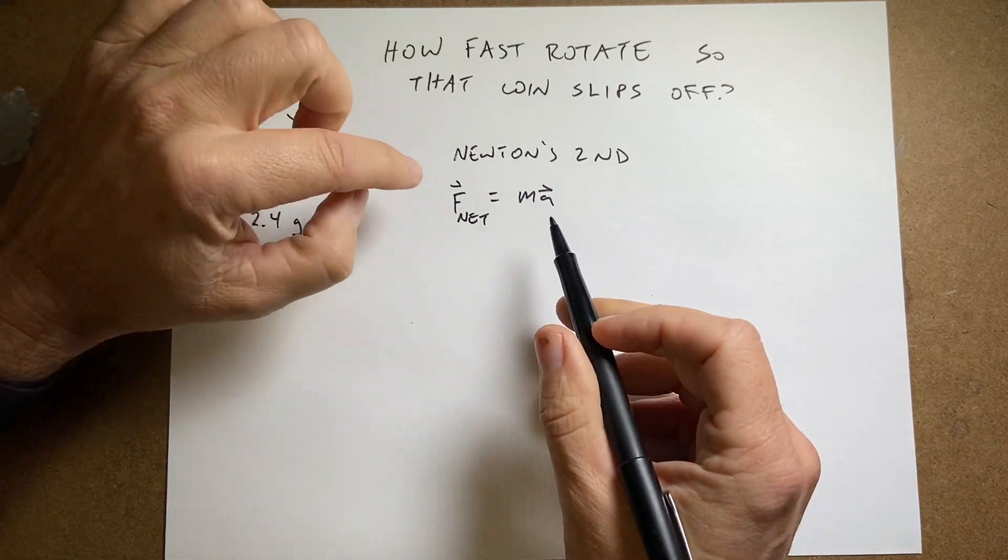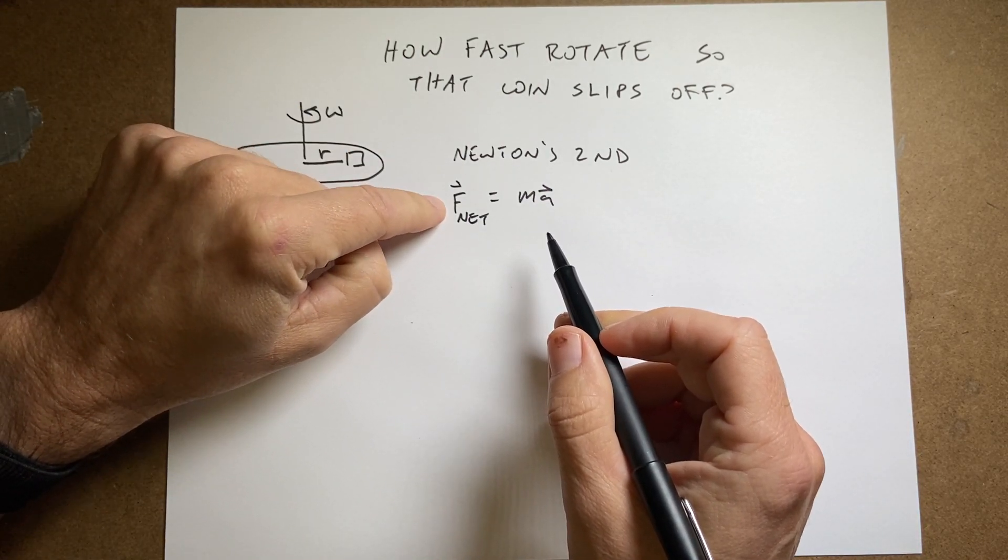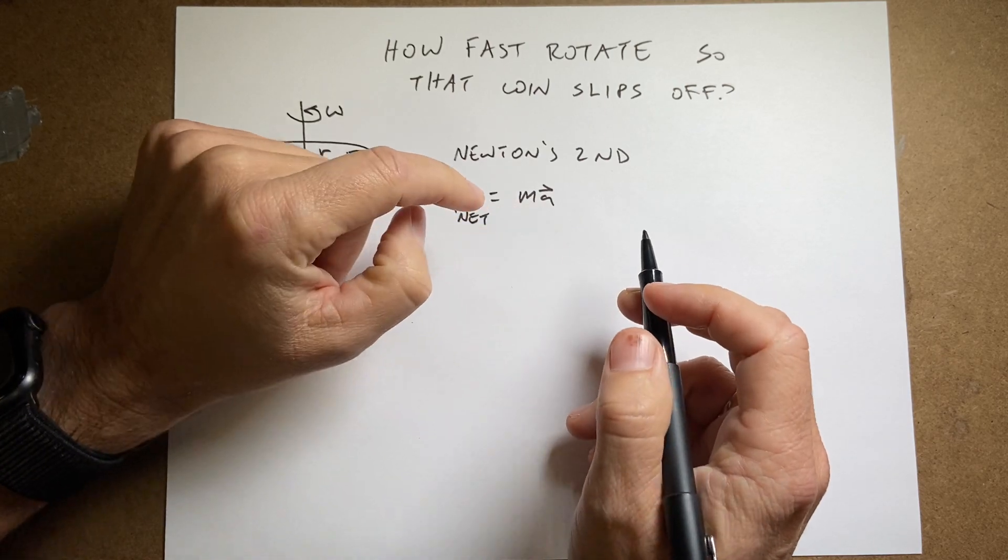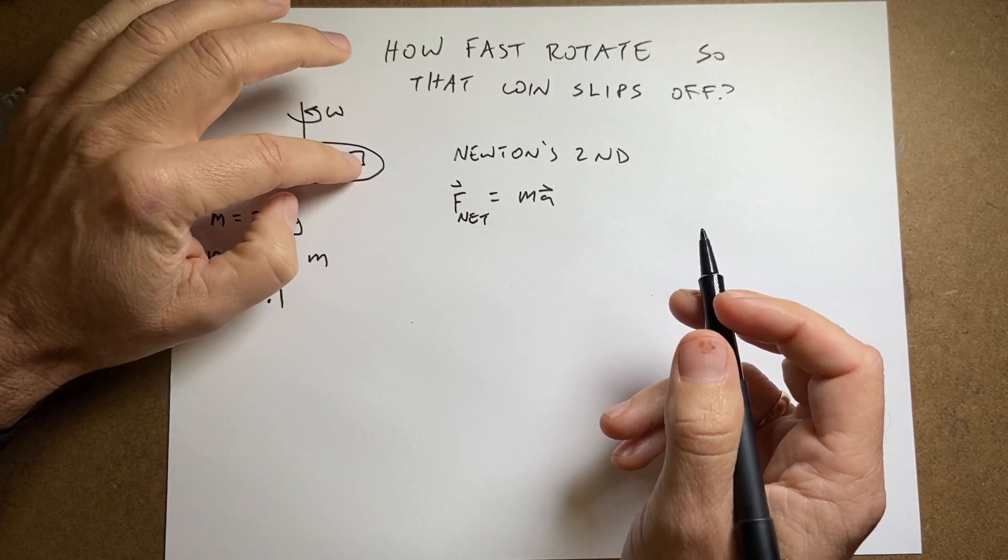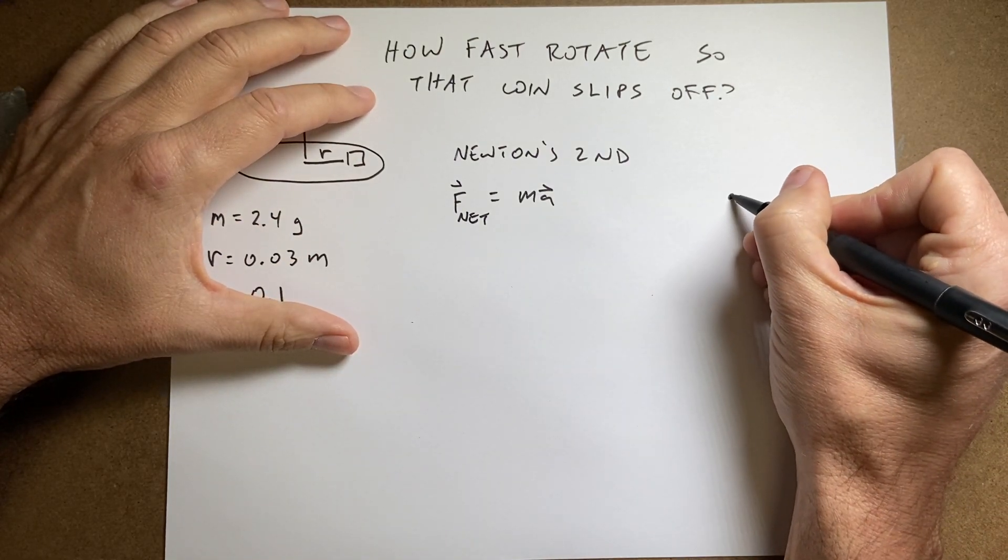So the first thing to start with is Newton's second law. This says that the net force on an object is equal to its mass times acceleration. Now if I look at this object right here let's draw the forces on it. I'm going to put it as just a dot.